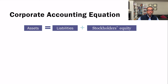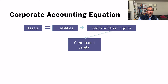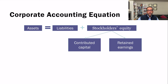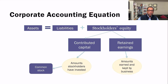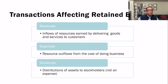Assets equal liabilities plus shareholders' equity, where shareholders' equity is divided into two main areas: contributed capital, which is common stock representing the amount stockholders have invested, and retained earnings, which is the amount earned and kept by the business from previous years' profits.